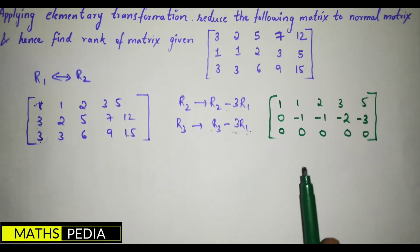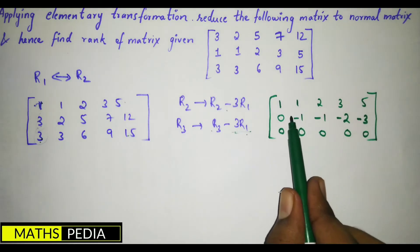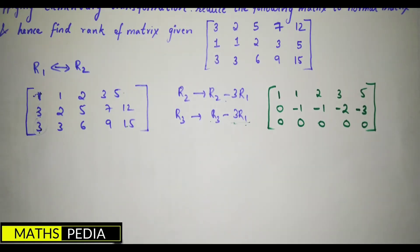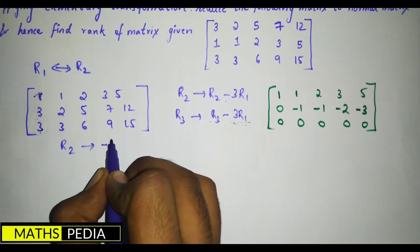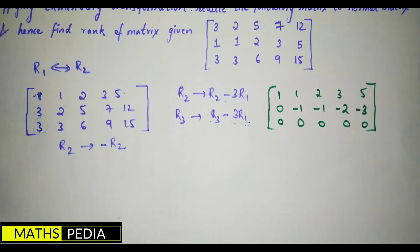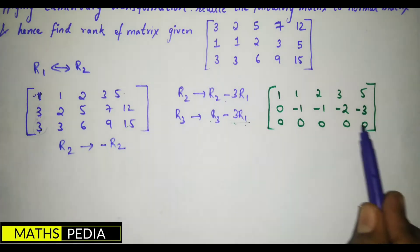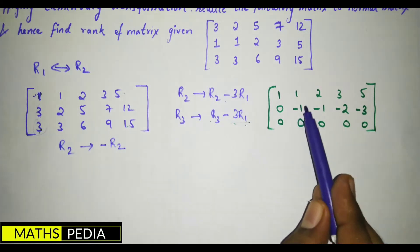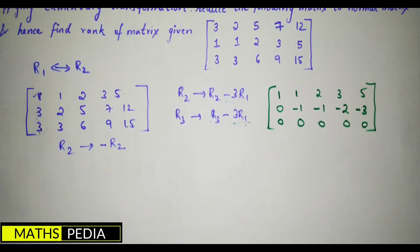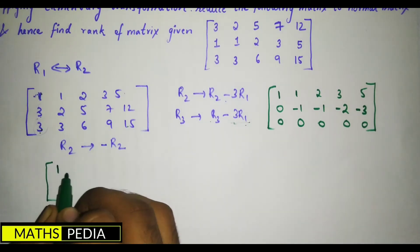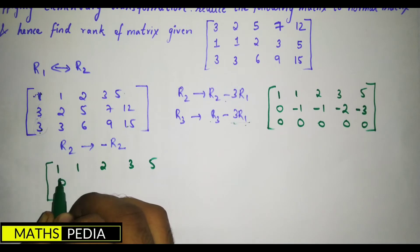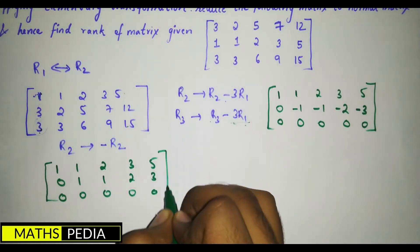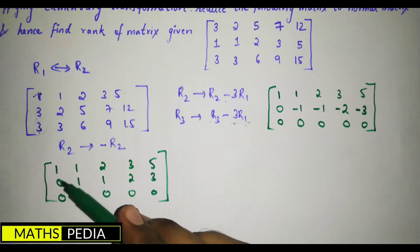Now I want to make the leading entry of R2 positive. To do that, I apply R2 = −R2, multiplying the entire row by −1. This gives us a positive 1 as the leading entry. After this operation, the matrix becomes: first row 1, 1, 2, 3, 5; second row 0, 1, 1, 2, 3; third row remains all zeros.